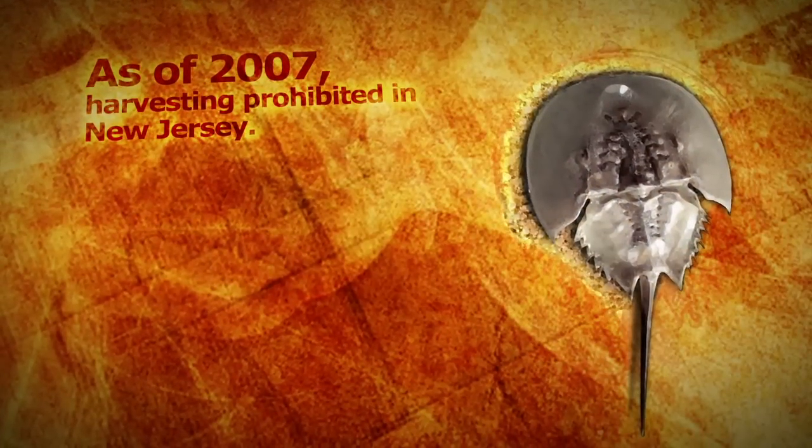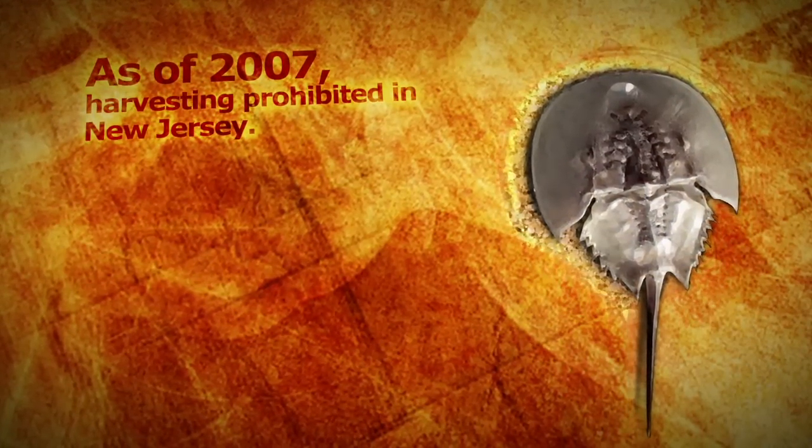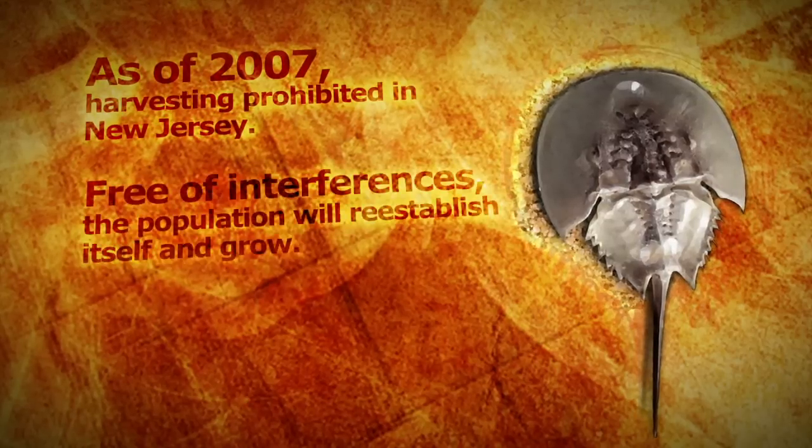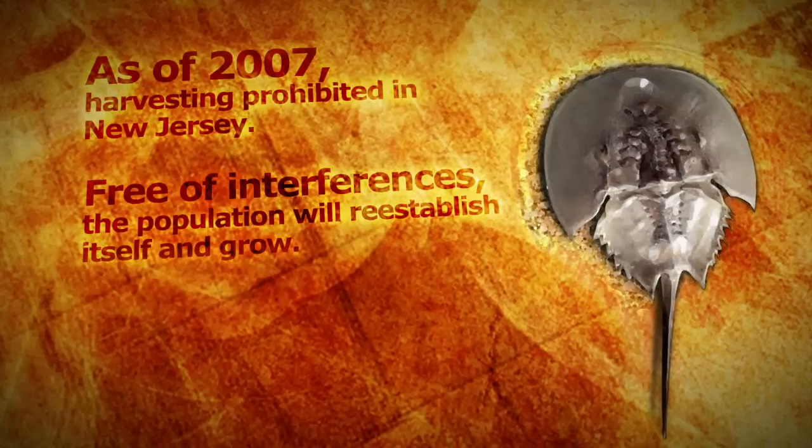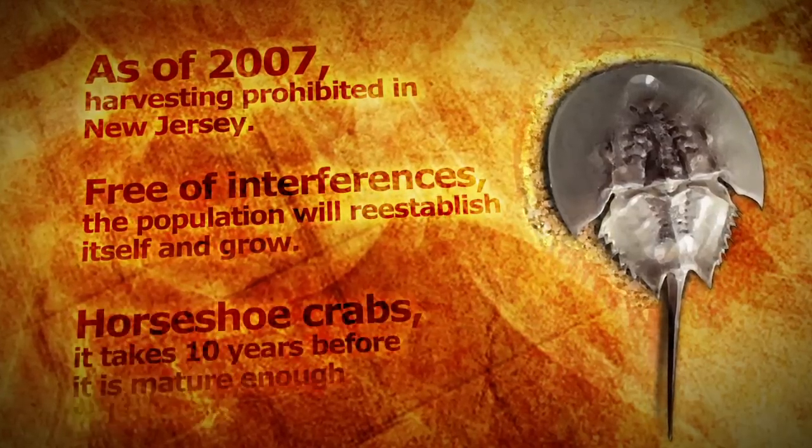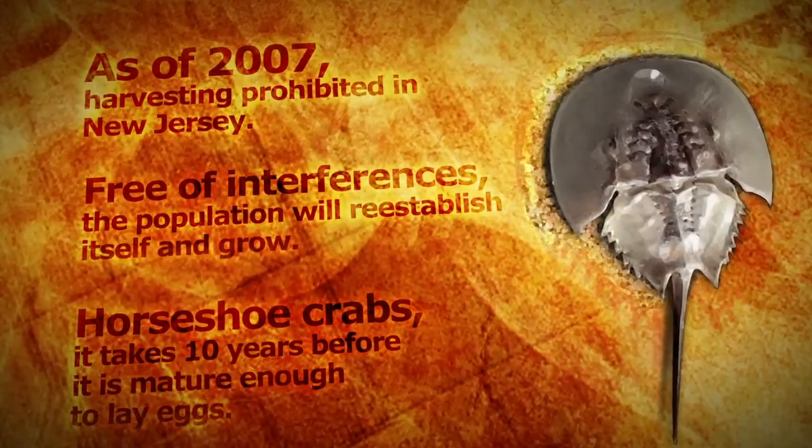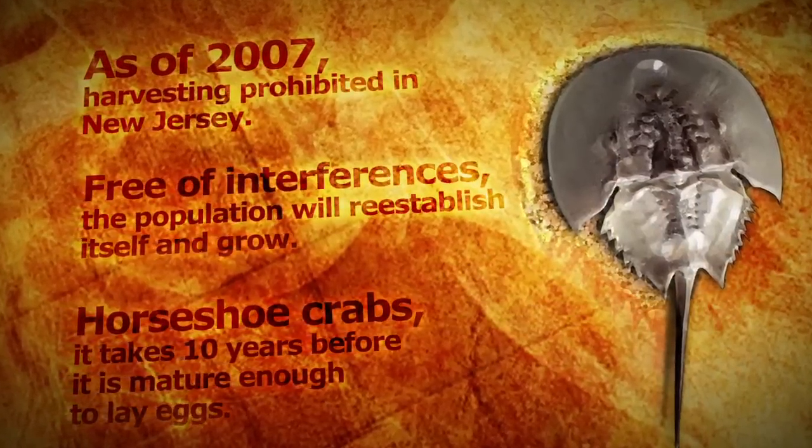Since 2007, it has been prohibited to catch horseshoe crabs in New Jersey. Barring any further threats, the population should be able to recover. Although this could take time, since it takes on average 10 years before a horseshoe crab is mature enough to lay eggs.